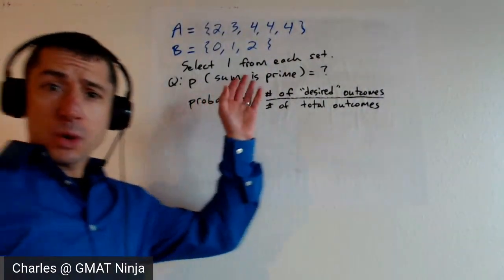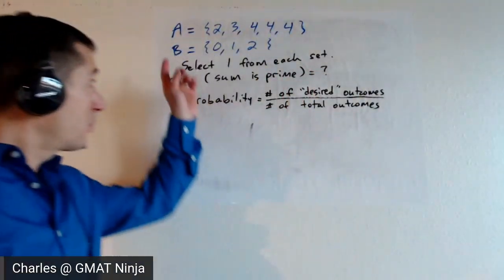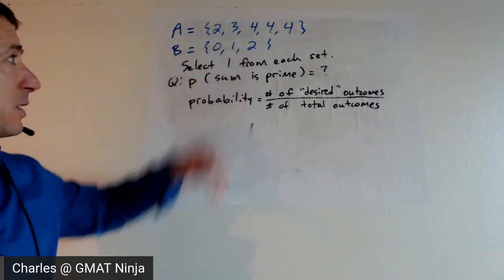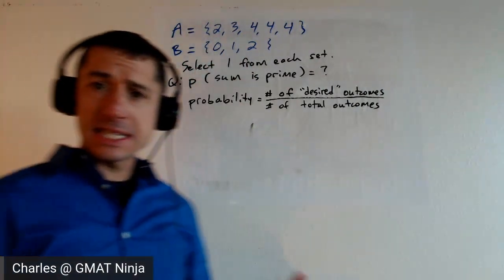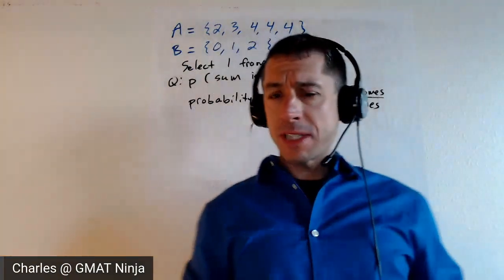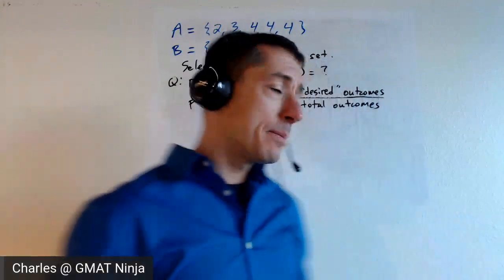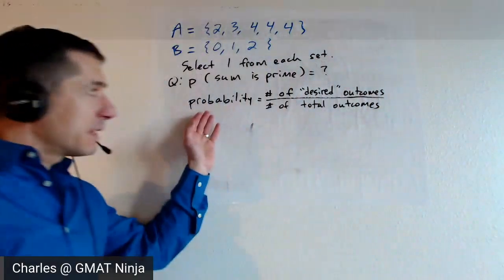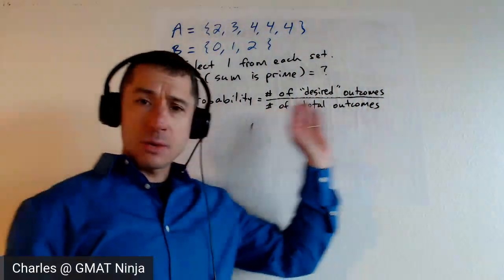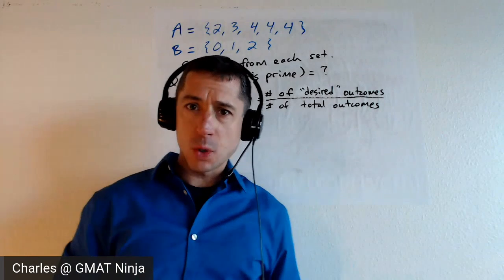Okay, this one's pretty straightforward. We got two sets of numbers. Set A has two, three, four, four, and four. Set B has zero, one, and two. We're going to select one from each set. We want to know what's the probability that the sum is prime. Probability — just the definition of probability here — it's always the number of desired outcomes over the number of total outcomes.